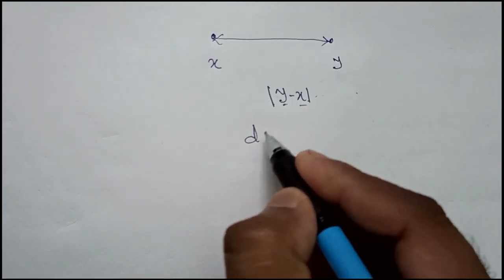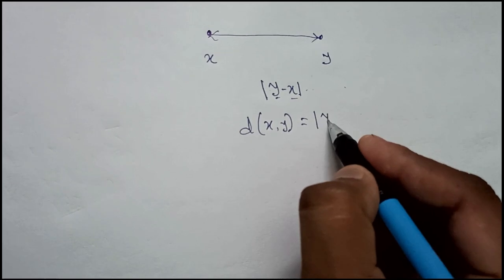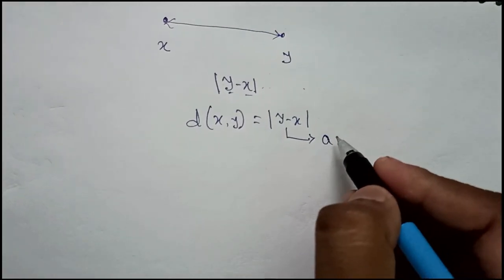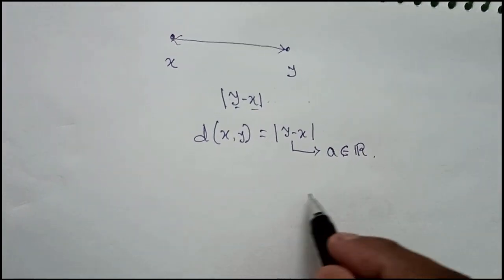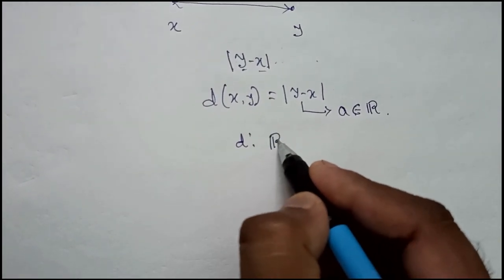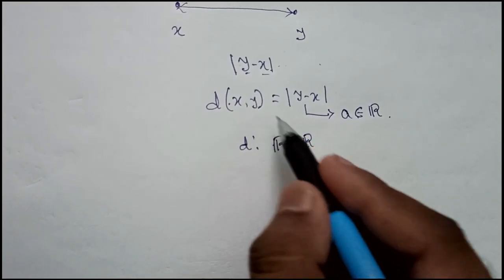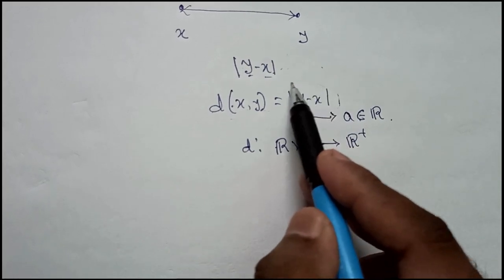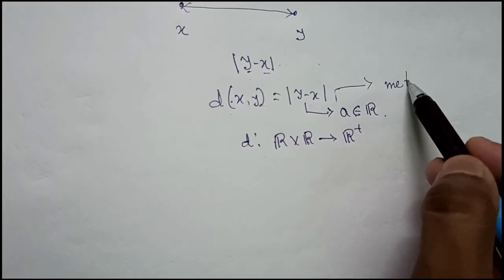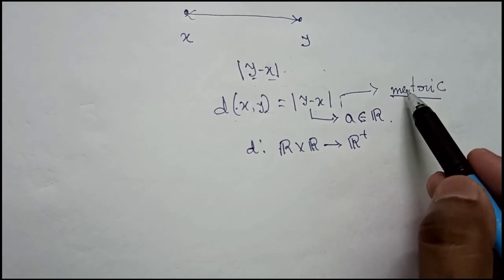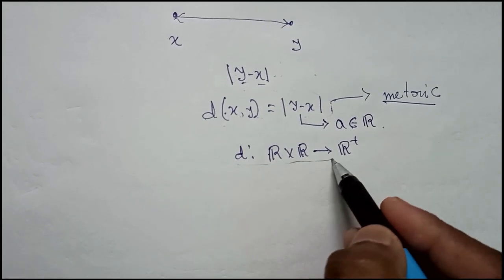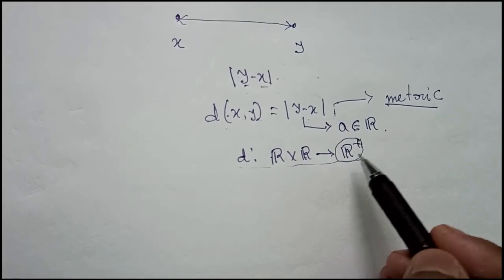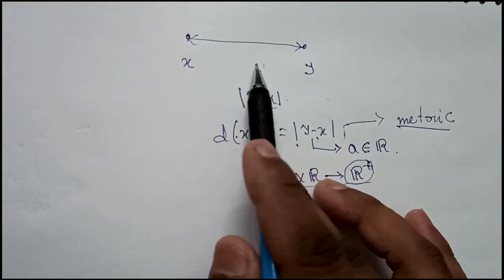Now if I define d of (x, y) and I say that this one is y minus x, so what I shall get from here is a particular real number, let it be a, and that will belong to set of real numbers. Now d is a function which is from R cross R because this x is from R, y is also from R to R plus because this function is giving us distance. That is why it is called distance function or from this point forward we shall call it metric. Obviously the output of the distance function is in R plus because minimally it can be zero but it can never be negative. Have you ever seen negative distance? Nope.